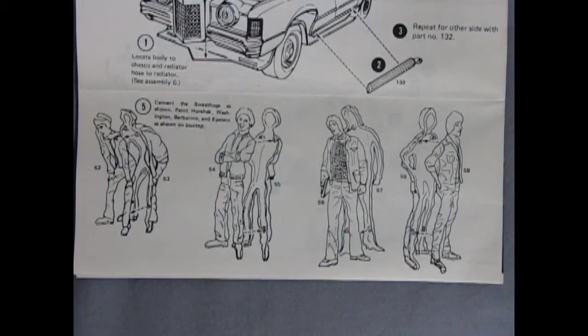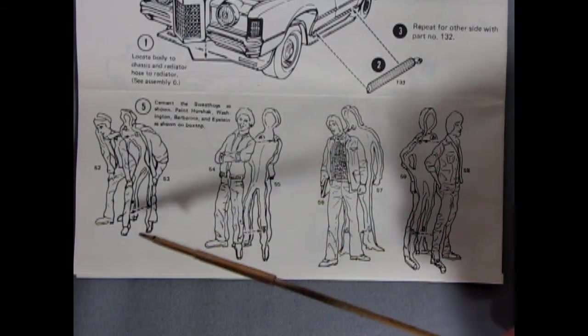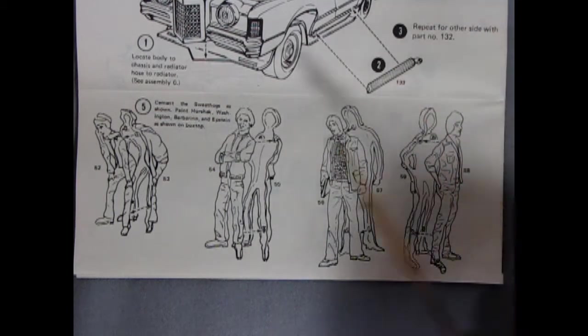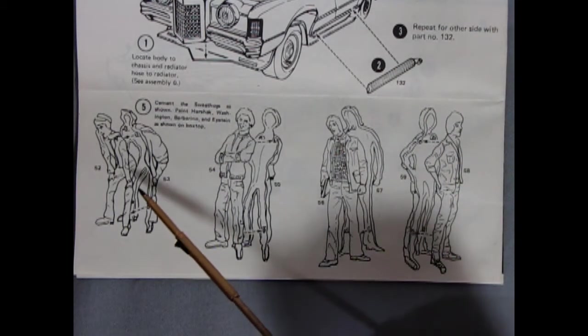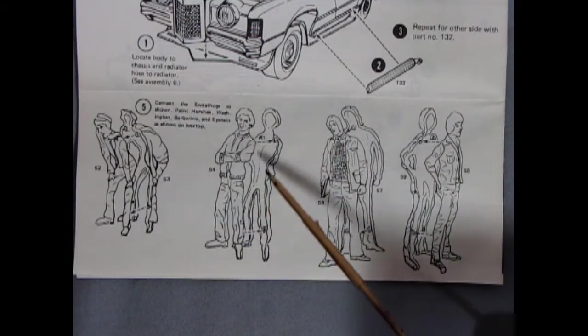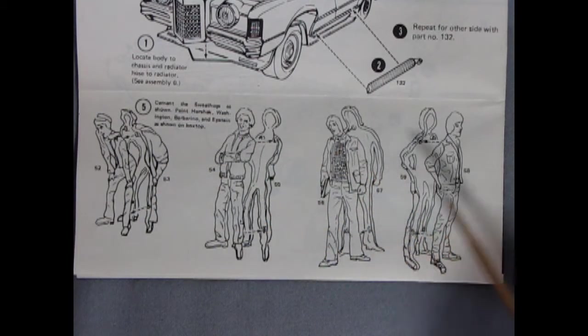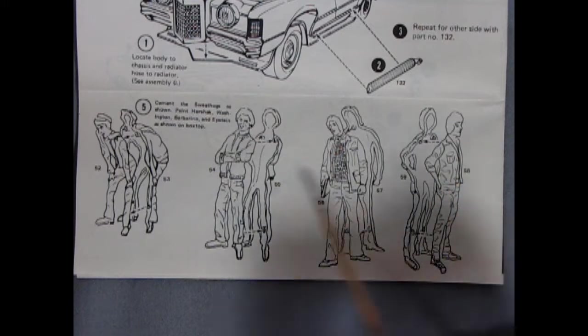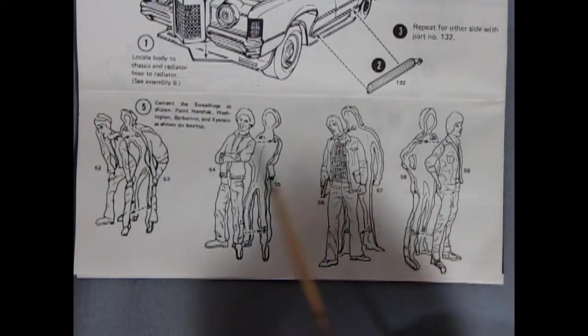This panel of our instruction sheet shows our four figures and what they look like and also their relationship to the car. So here we have Horshack bending over to look in the trunk. Washington standing up talking with Barbarino and Epstein and it says to paint all these figures as shown on the box top.